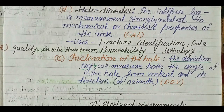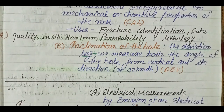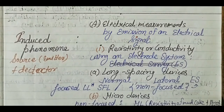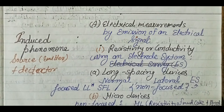There is also a log for the inclination of the hole — how the hole is deviated — and an azimuth log. Now we come to induced phenomena, where both a source and a detector are present, unlike the natural source logs where only a detector was used.